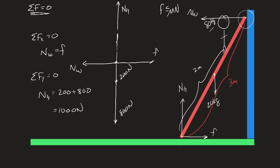We know the normal force from the ground is 1000 newtons, but we don't yet know the frictional force. We want the minimum coefficient of friction for the ladder to stay in place, and this is an inequality. To figure out the answer we need to move on to the torque problem.